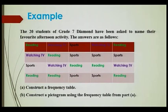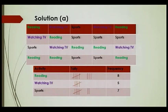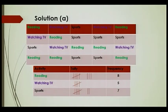We consider a second example. The 20 students of Grade 7 Diamond have been asked to name their favorite afternoon activity. We are going to use our tally, which we learned in the previous lesson, to construct the frequency table. Looking at the data: Reading — we put one vertical bar, Watching, and so on. The resulting frequency table shows eight students who like to read, five who like to watch TV, and seven who like to practice sports.